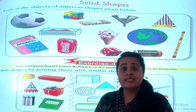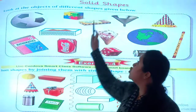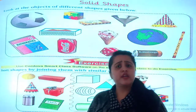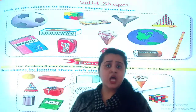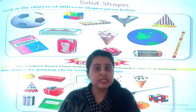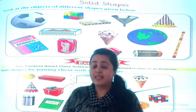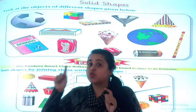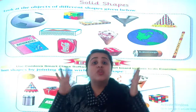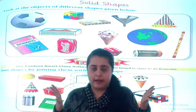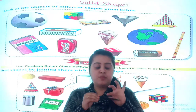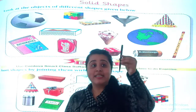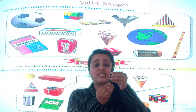The heading is Solid Shapes. Solid — what does it mean? Solid means that if you touch something, it will not change its shape. You can see the shape clearly. For example, this pen — you can touch it and its shape does not change.